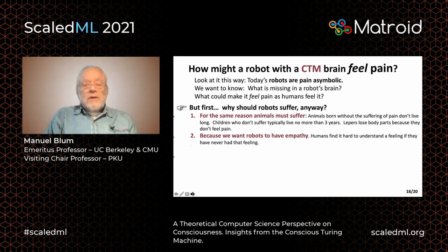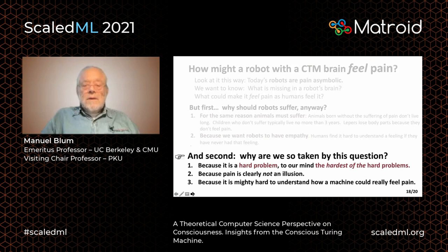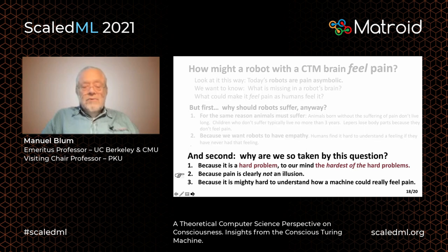So what's different in the pain asymbolic head? How might a robot with a CTM brain feel pain? Today's robots are pain asymbolic — we want to know what is missing in a robot's brain, what could make it feel pain as humans feel it. Why should robots suffer anyway? First, for the same reason animals must suffer — animals born without the suffering of pain don't live long. Second, because we want robots to have empathy; humans find it hard to understand a feeling if they have never had that feeling. And we are so taken by this question because it is the hardest of the hard problems, because pain is clearly not an illusion, and because it is mighty hard to understand how a machine could really feel pain.